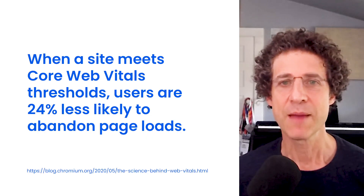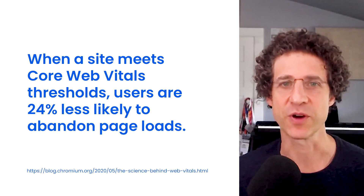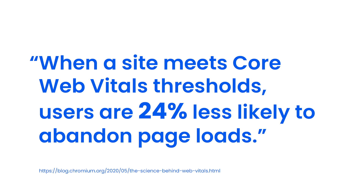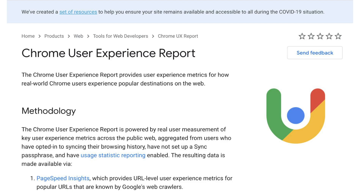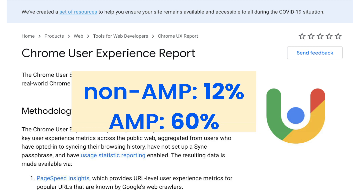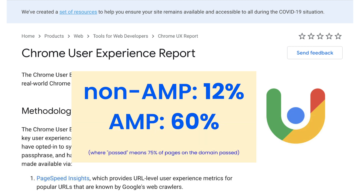If you're a news publisher, page experience will be a ranking factor in the Top Stories carousel. A recent study showed that when a site meets Core Web Vitals goals, users are 24% less likely to abandon page loads. So how does the web do in these metrics? We checked the Chrome User Experience report, and at the time of this talk, 12% of non-AMP domains passed Core Web Vitals. For AMP domains, the figure was 60% — so AMP domains were five times more likely to pass than non-AMP.